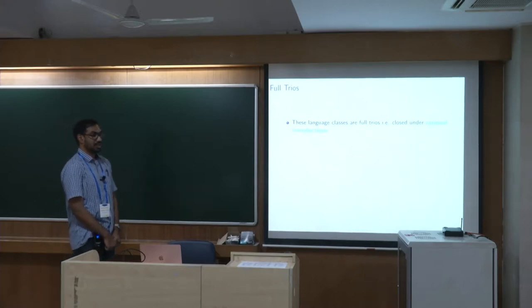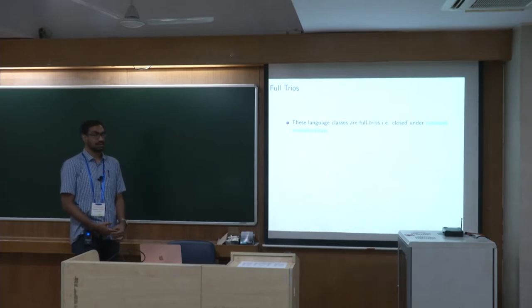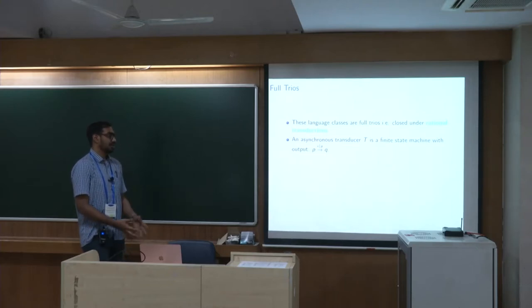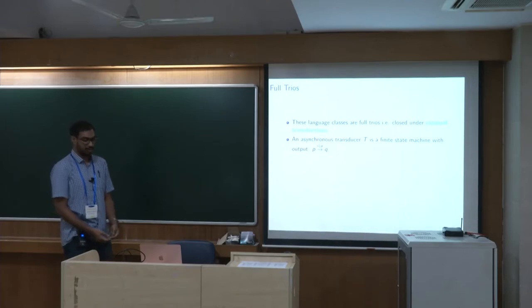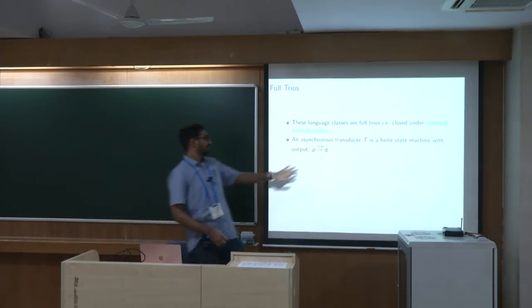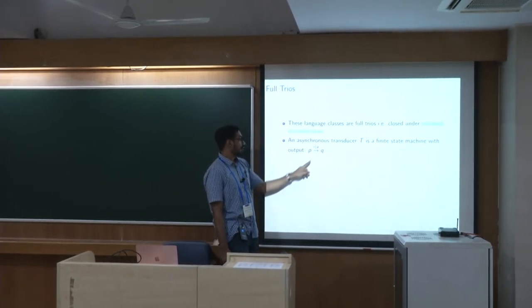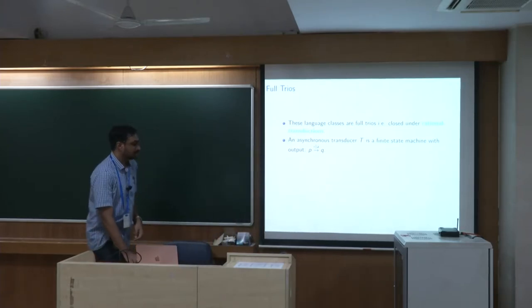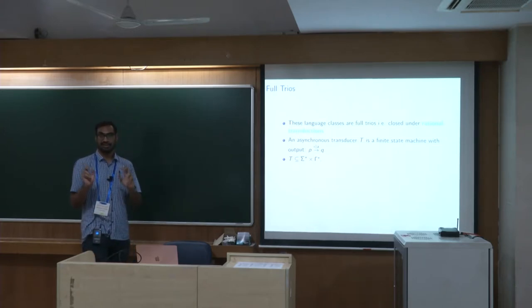One observation is that all language classes where this coincidence holds are full trios — closed under rational transductions. A rational transduction is defined via an asynchronous transducer, which is an automaton that produces output. For instance, a machine in state p transitions to state q, reading epsilon and outputting a.